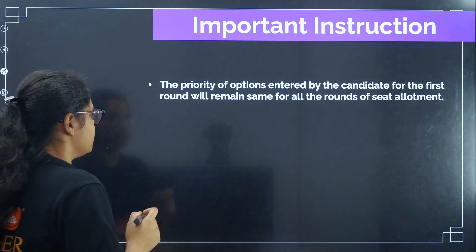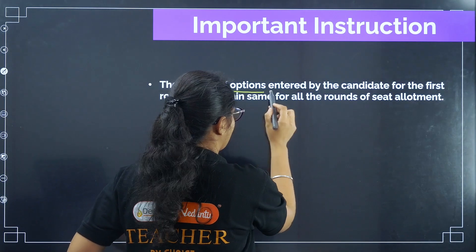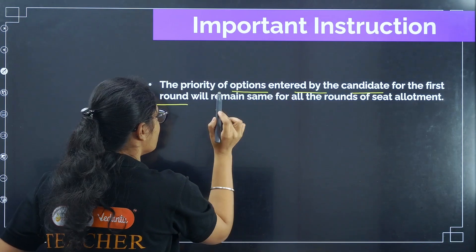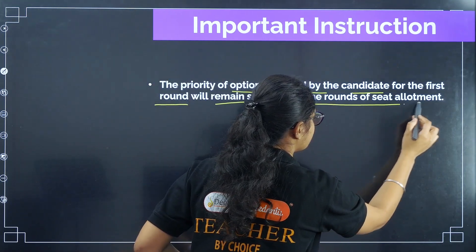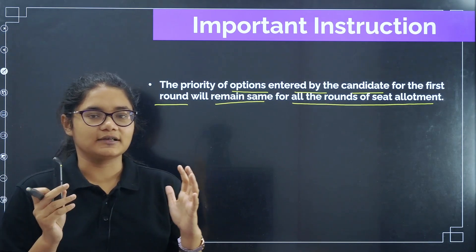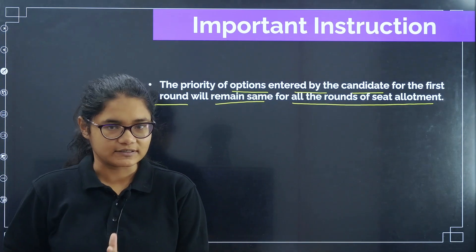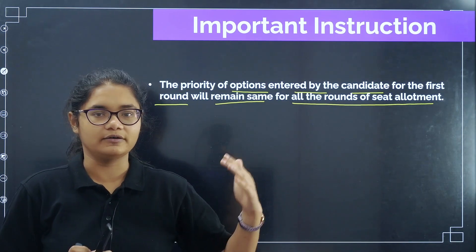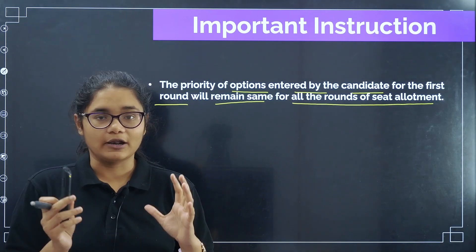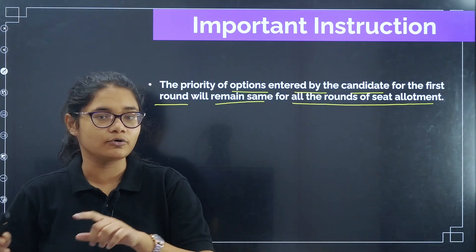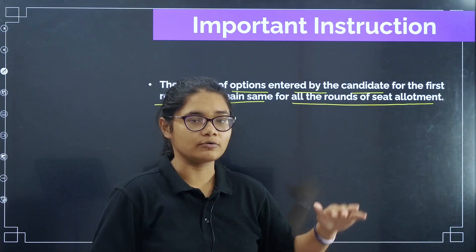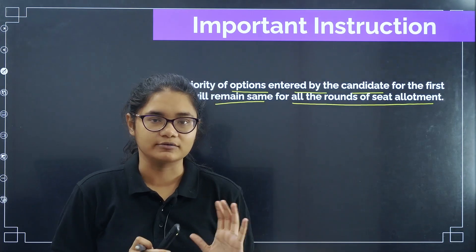So what does that mean? The priority of options entered by the candidate for the first round will remain the same for all the rounds of seat allotment. As you know, in the counselling process there are three rounds: Round 1, Round 2, and the Extended Round 2. So whatever options you enter now — that is before Round 1 — that will remain for all the other rounds in the counselling process.